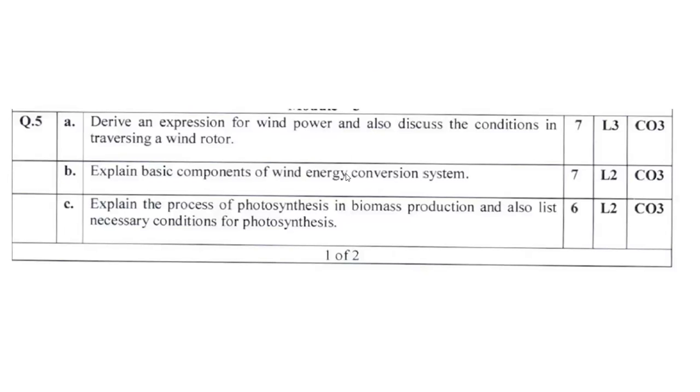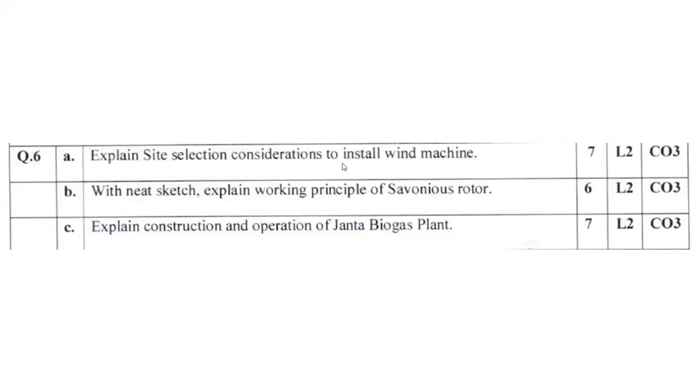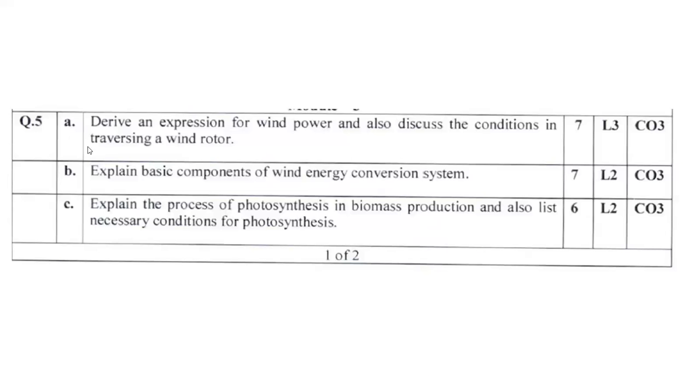5b: Explain the basic component in wind energy conversion system. It is better to draw the block diagram. We can draw the rotor, then you can mention the power electronic converter, then you can mention the grid. That is regarding the wind energy conversion. AC to AC converter is required for the wind energy conversion. You can add the storage devices.